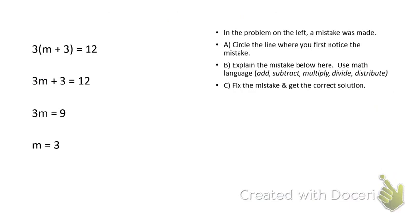You see on the left hand side it has a problem that is solved. On the right hand side it says in the problem on the left a mistake was made. A) Circle the line where you first notice the mistake. B) Explain the mistake below here using math language. And then C) Fix the mistake and get the correct solution. So the first line is the problem. I see parentheses. It tells me I should distribute. In the second line it did distribute but I see a mistake there. Let me explain the mistake on the right hand side.